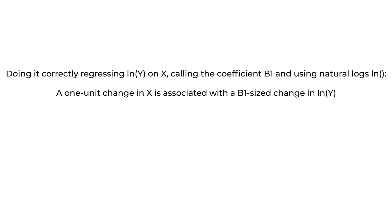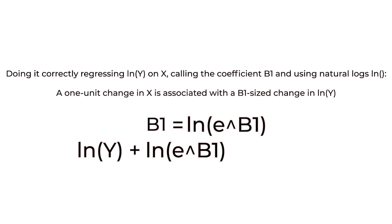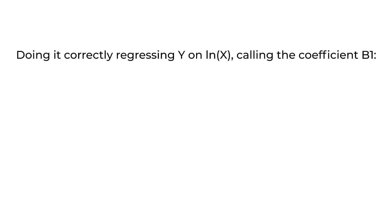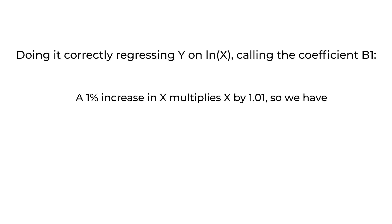The correct way is to do the actual conversion. If we're regressing the log of y on x, a one-unit change in x is associated with a beta-one-sized change in log(y). A beta-one change in log(y) is the same as log(e^β₁), since the natural log of e to any power is just that power. So log(y) plus log(e^β₁) becomes log(y · e^β₁), meaning y has been multiplied proportionally by e^β₁. So a one-unit increase in x is associated with a proportional increase of e^β₁ in y.